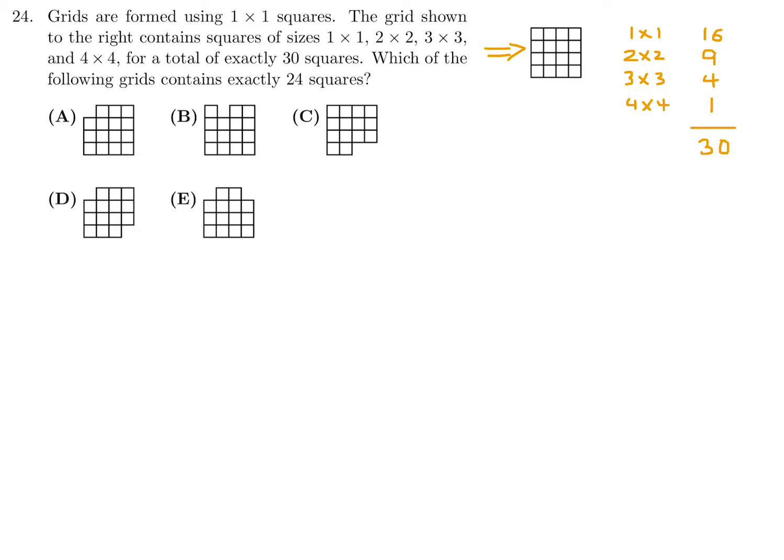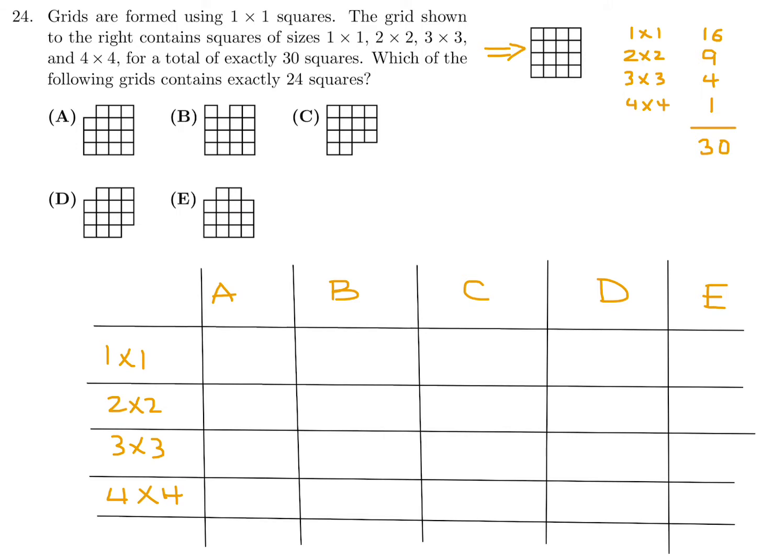Because for the answer choices, we've got to do the exact same thing. So for A, B, C, D, and E, I've got to do the same thing. 1 by 1, 2 by 2, and 3 by 3, and 4 by 4. And at the end, I've got to add them all up and see which one equals 24. All right. Well, the first thing I notice is that each of these answer choices has at least one or two blocks, 1 by 1 blocks, taken out. So that means there's no way for me to create a 4 by 4 in any of them. So that makes it easy.